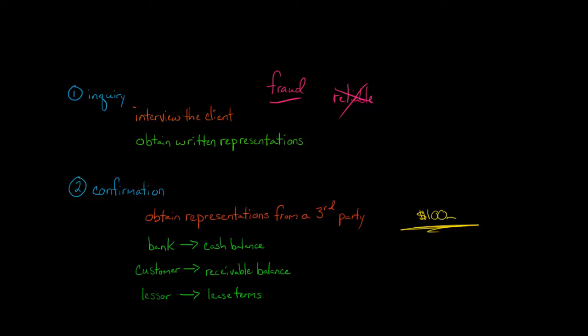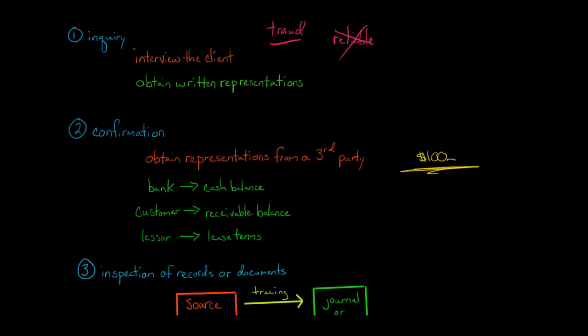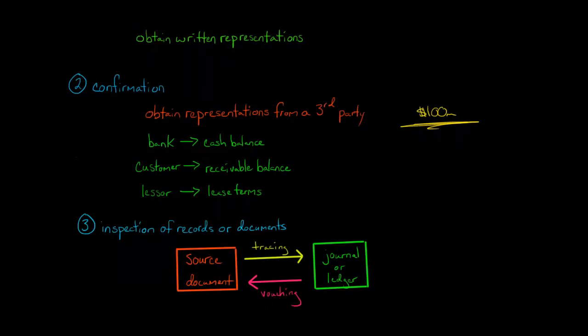The client obviously has an incentive to, in some cases, be dishonest with you. If we're talking about a customer of the client, you can confirm the receivable balance. You could talk to a lessor about lease terms, or to an attorney about pending litigation. You're going to a third party and getting representations from the third party.